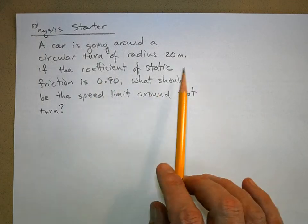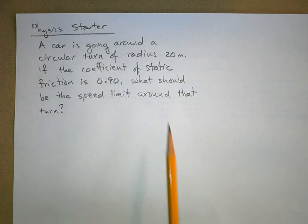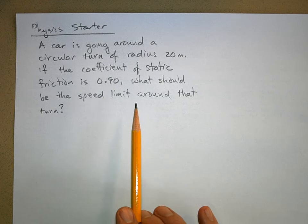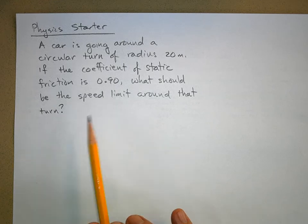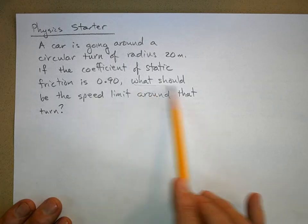We've got a car going around a circular turn of radius 20 meters. If the coefficient of static friction is 0.9, what should be the speed limit around that turn? This is kind of a vague question here.